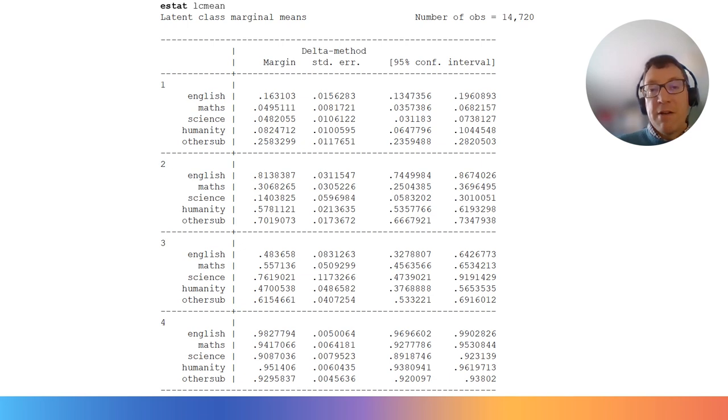Class 1 is characterized by the lowest levels of overall attainment, i.e., the probability of gaining an A star to C in GCSE English is 16%, 5% in GCSE Maths, 5% in GCSE Science and so on.